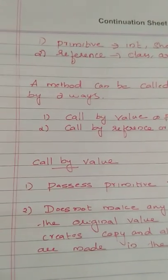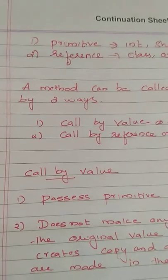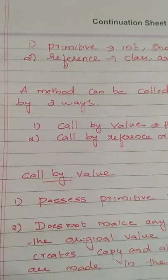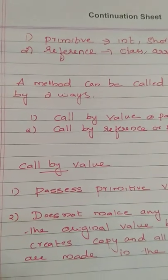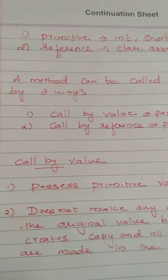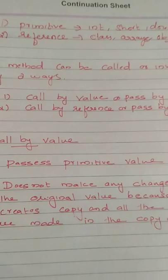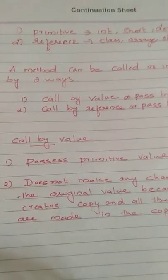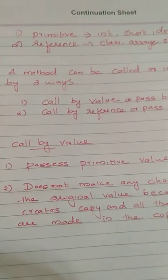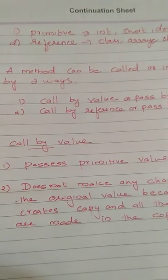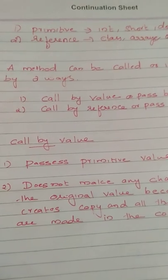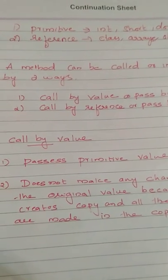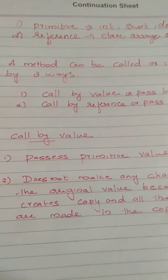First, we will discuss what is call by value. In call by value, we pass a primitive value to a method, such as integer, short, double, char, string, etc.